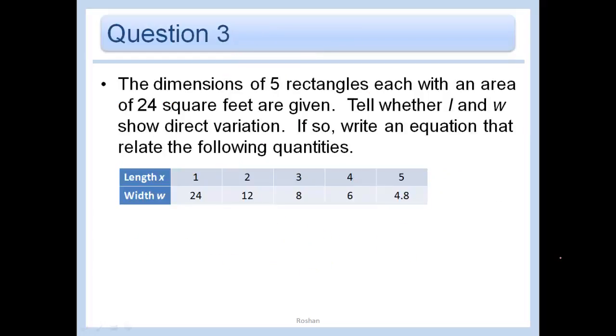Dimensions of 5 rectangles, each with an area of 24 square feet, are given. Tell whether L and W show direct variation. If so, write an equation that relates the following quantities. Okay. I like to look at the equation Y equals AX and solve for A in order to see if this follows that pattern. So we would divide by X, divide by X, and A equals Y over X. Okay, we solved for that A you were looking for. And we know A can't be different for different ordered pairs. A has to be the same value all the way across.